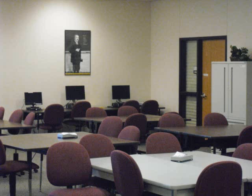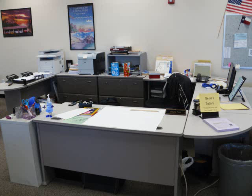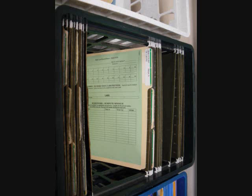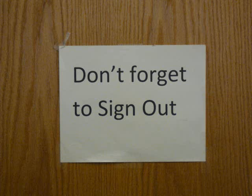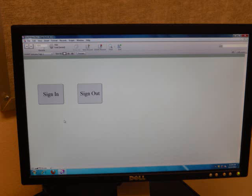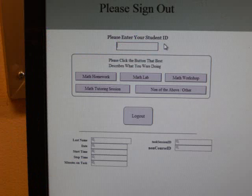When you are finished, take your Math Hub card and your assignment back to the staff member at the desk. The staff member will mark your card indicating that you have completed your lab assignment. Put your Math Hub card back in the appropriate folder, and don't forget to sign out before you leave. Go to the sign-in computer and click on the sign-out button, where you will be prompted for your student ID and what type of lab assignment you did.